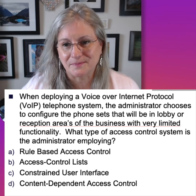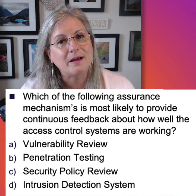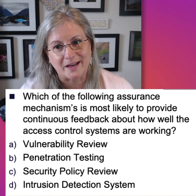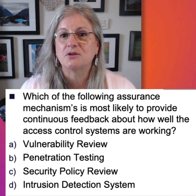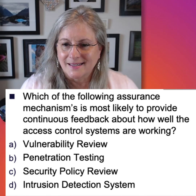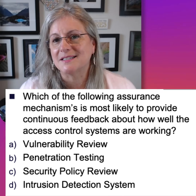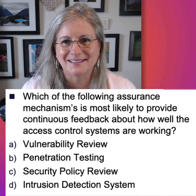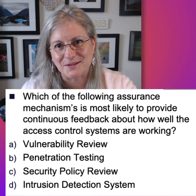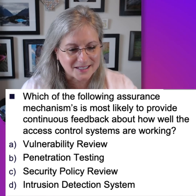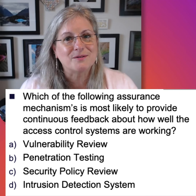Let's try another one. Which of the following assurance mechanisms is most likely to provide continuous feedback about how well the access control systems are working? Vulnerability review, penetration test, security policy review, and intrusion detection system. The keyword in the question, I think, is continuous. If you want something continuously done, don't get a human — a person needs coffee, sleep, lunch, and will answer the telephone. If you need something done continuously, what you need is a computer.